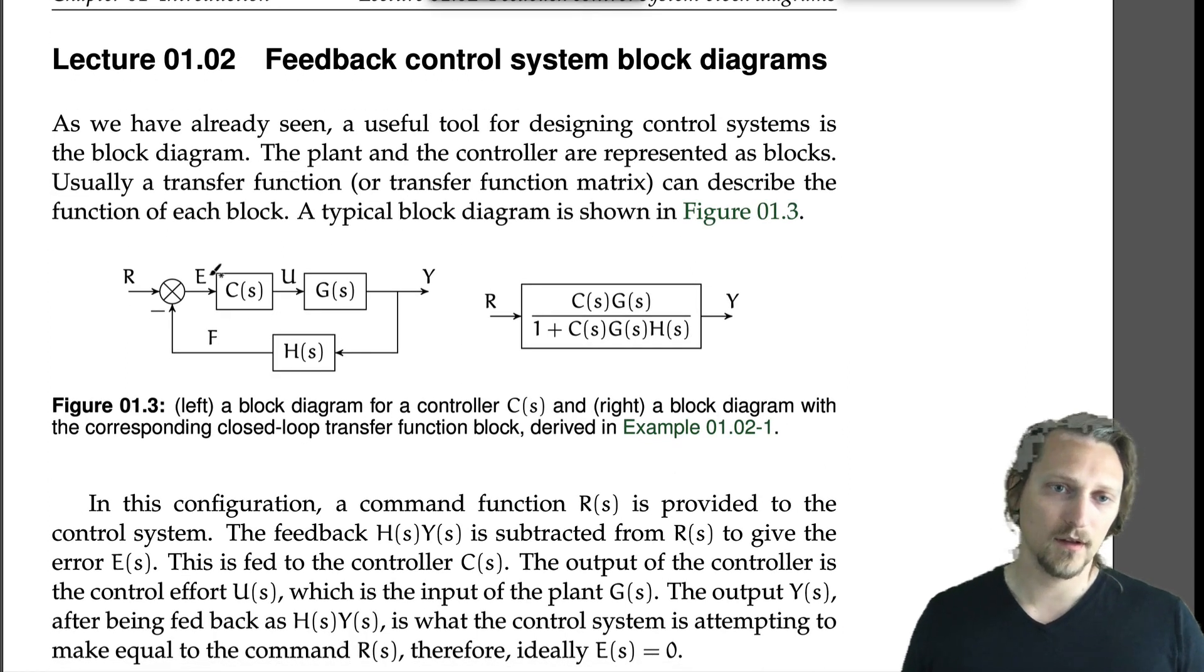This left one specifically, we've got a plant with transfer function G, output Y. We think of these typically as being Laplace domain variables: G, H, Y, U, E, F. The output Y gets fed back through some measurement, typically H, and the feedback transfer function H results in Laplace transform variable F. It gets compared via a summing junction, subtraction from the command R. R minus F gives E, which goes into the controller transfer function C.